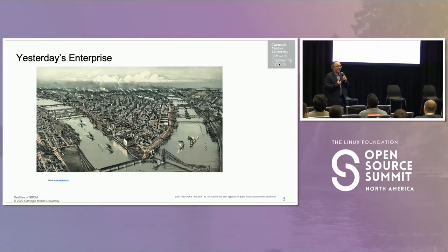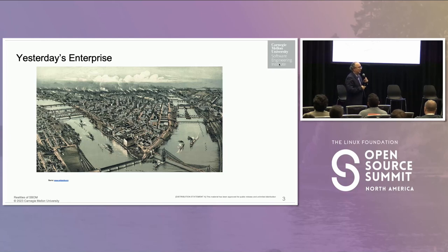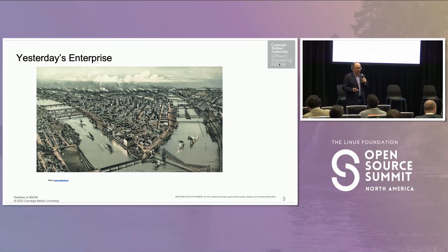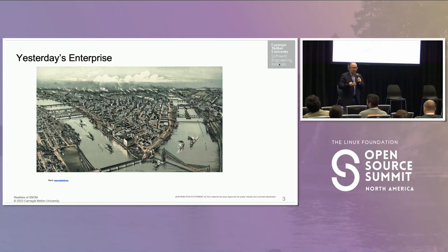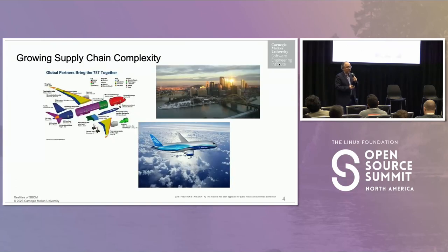Does anybody know what this picture is about? It's Pittsburgh — about a hundred years ago. Why I brought this up is that things are evolving. Pittsburgh is known for the steel industry, not just the Steelers. It was known for steel manufacturing. Now it got changed — it's more about building supply chain with respect to technology and everything else. It got evolved.